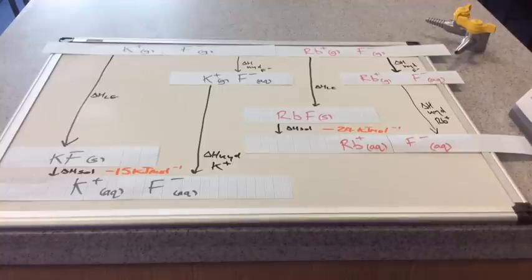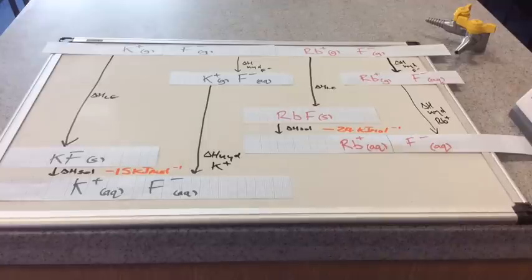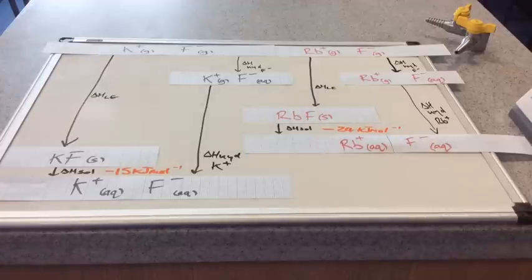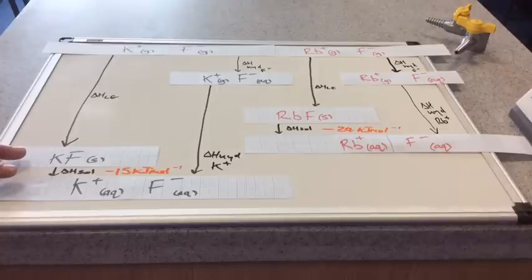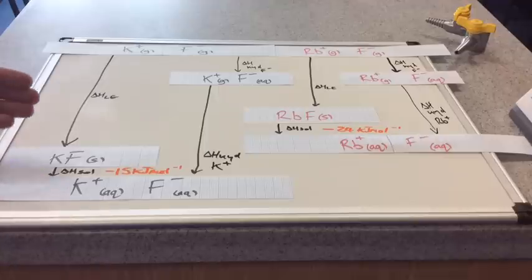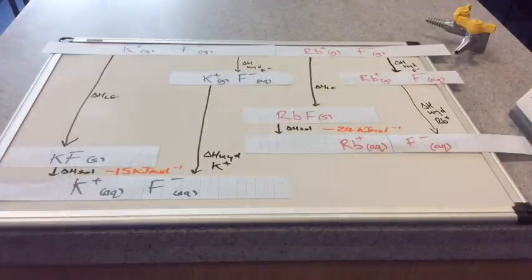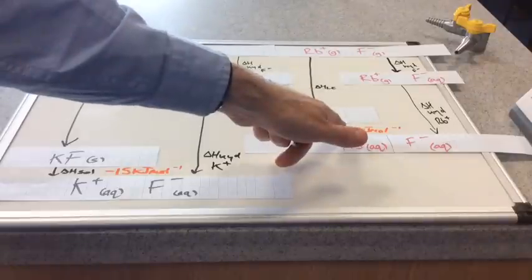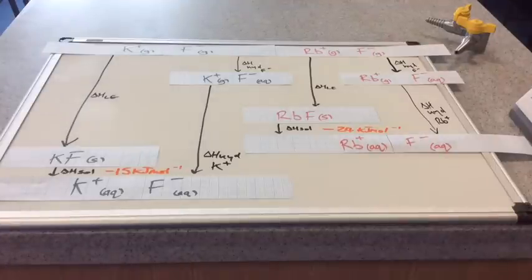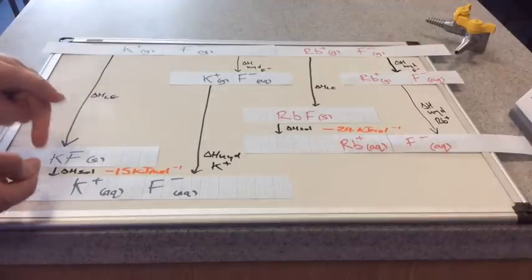We'll take it up a notch now. In orange, I've included the enthalpy change of solution for potassium fluoride: minus 15 kilojoules per mole, and for rubidium fluoride: minus 24 kilojoules per mole. The best way to think about it is as a gap between the solid and the aqueous ions. There's a smaller gap for potassium fluoride than for rubidium fluoride — rubidium fluoride is more exothermic because the gap is bigger.